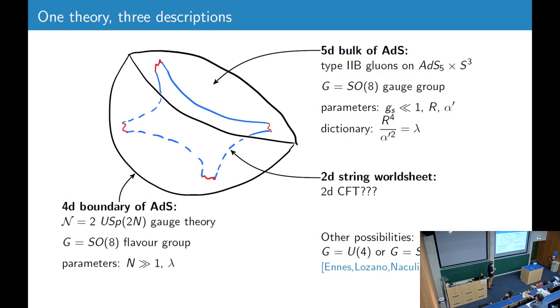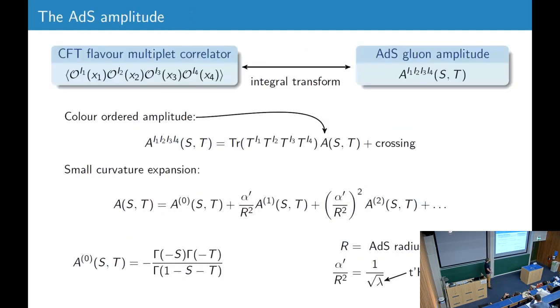So now we have this theory. We have the luxury that it has, in principle, three descriptions. So on the boundary, we have an N equals 2 superconformal gauge theory with USP(2N) gauge group. We have the SO(8) flavor group, which we call G. and we have the parameters N, which we take large, and the 't Hooft coupling lambda. In the bulk, we have type IIB gluons on AdS-5 cross S-3 now. Here G becomes the gauge group, and we have to take the string coupling to be small, and we have, again, the AdS radius in alpha prime in this dictionary.